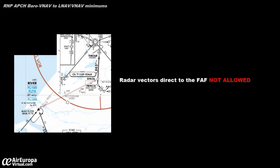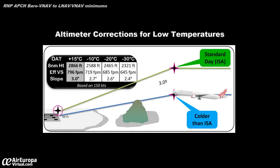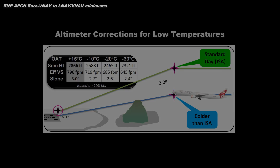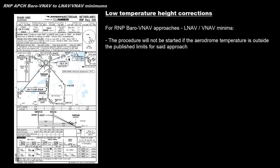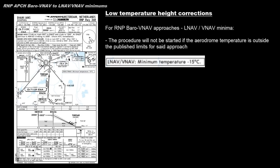Another thing to consider is that directs to the final approach fix are not allowed. There is also another limitation for BARO-VNAV approaches: altimeter corrections for low temperature. Altimeter errors occur at very low temperatures. When the temperature is colder than standard, the true altitude is lower than indicated, so the altimeter error can be significant. We must check the temperature limit on the chart in order to safely proceed with this approach. In this case, the limit is 15 degrees below zero.